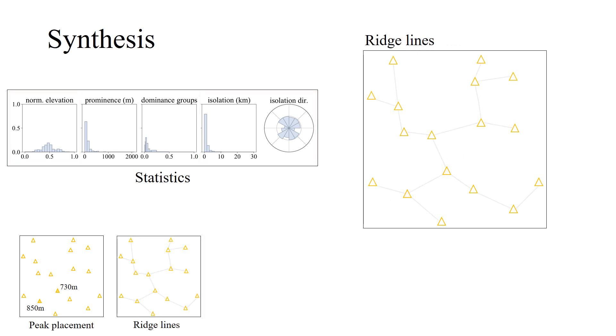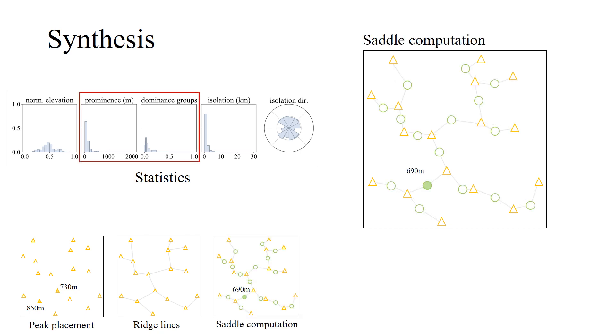Then the peaks are connected to form ridge lines. We compute saddle points and obtain the divide tree.